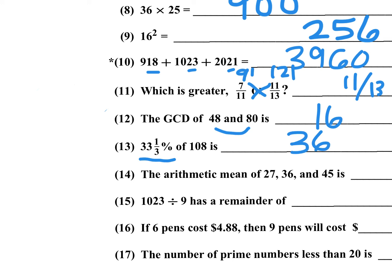The arithmetic mean of 27, 36, and 45. The mean is the average. Notice that 27 plus 9 is 36, and 36 plus 9 is 45. It turns out that 36 is the mean and the median, and it's the middle number. So the average there would be 36, since it's right in the middle.